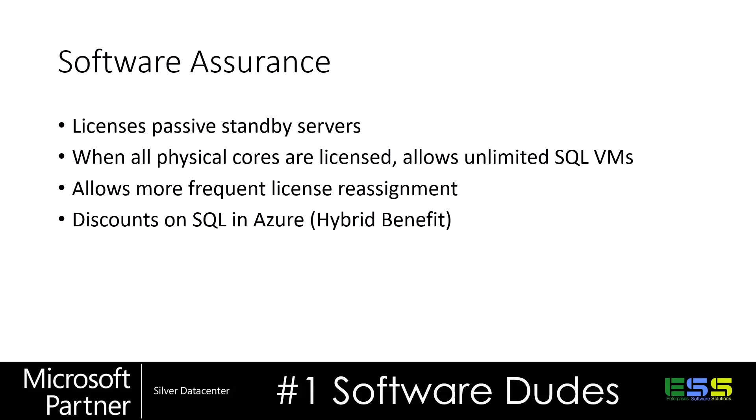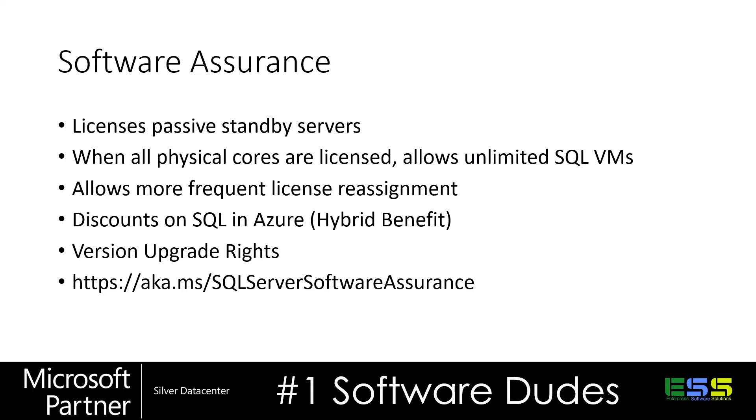With software assurance, you also get to use the hybrid benefit with your SQL licenses. You can run SQL Server on-premises with software assurance and run the same number of SQL servers in Azure with the hybrid benefit for a period of time, with the intention of migrating. If you do migrate, those licenses can move with your SQL farm into Azure, or you can choose to stay on-premises. Arguably the most important benefit is version upgrade rights — if you have SQL Server 2019 with active software assurance, when SQL Server 2022 comes out you will be entitled to upgrade. Microsoft's software assurance documentation has more information at the provided link.